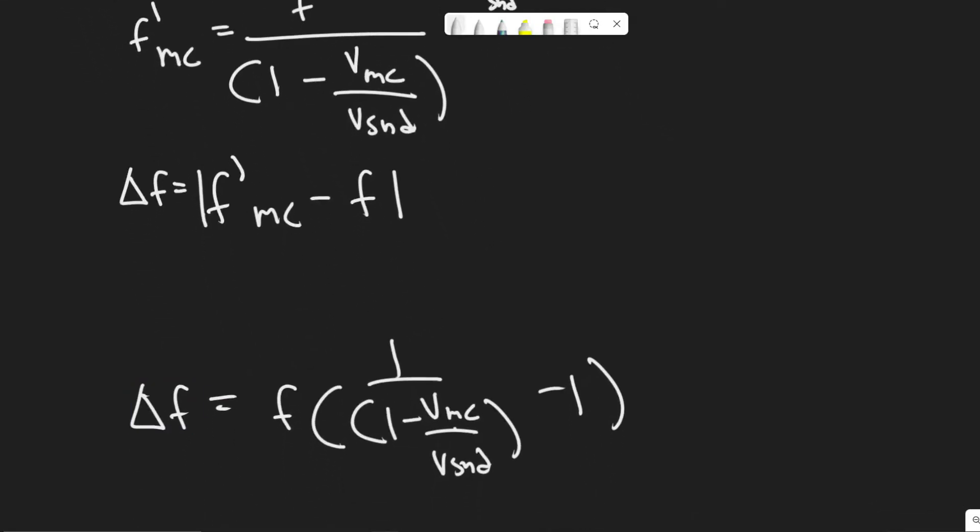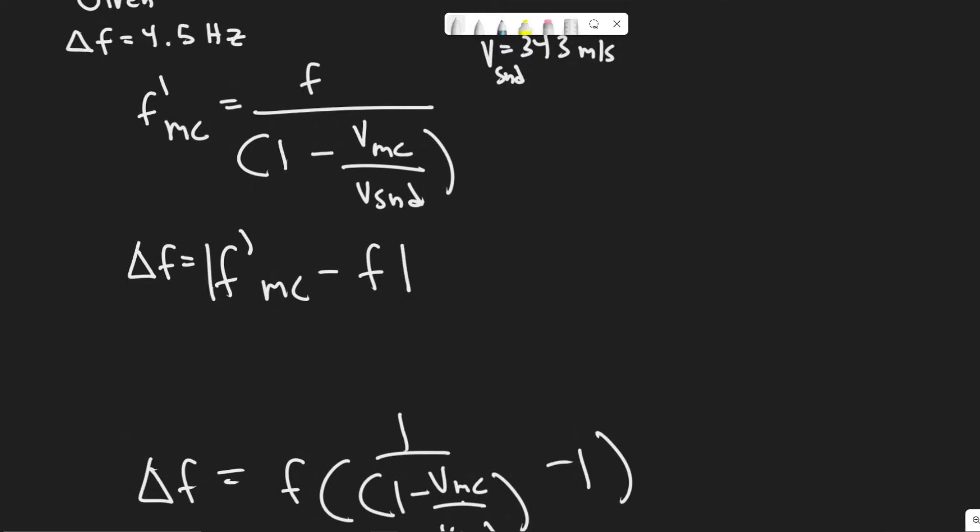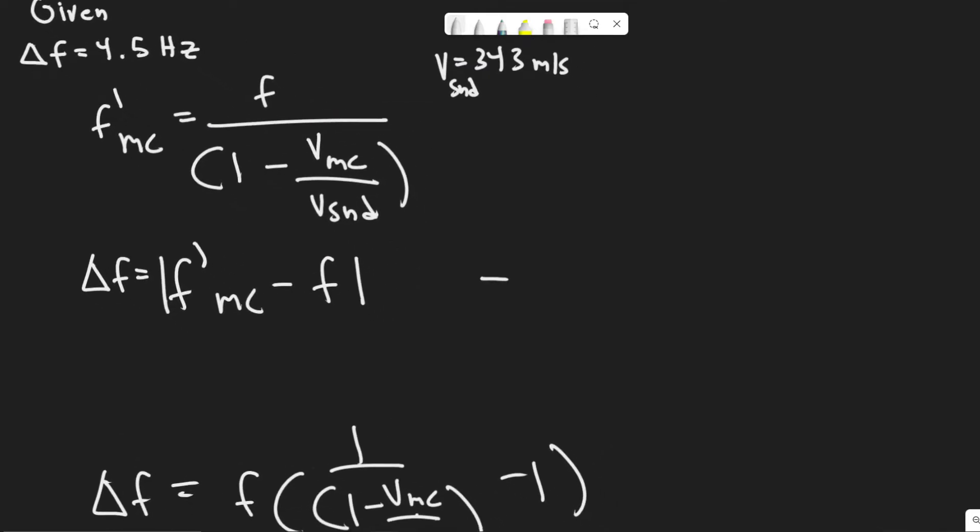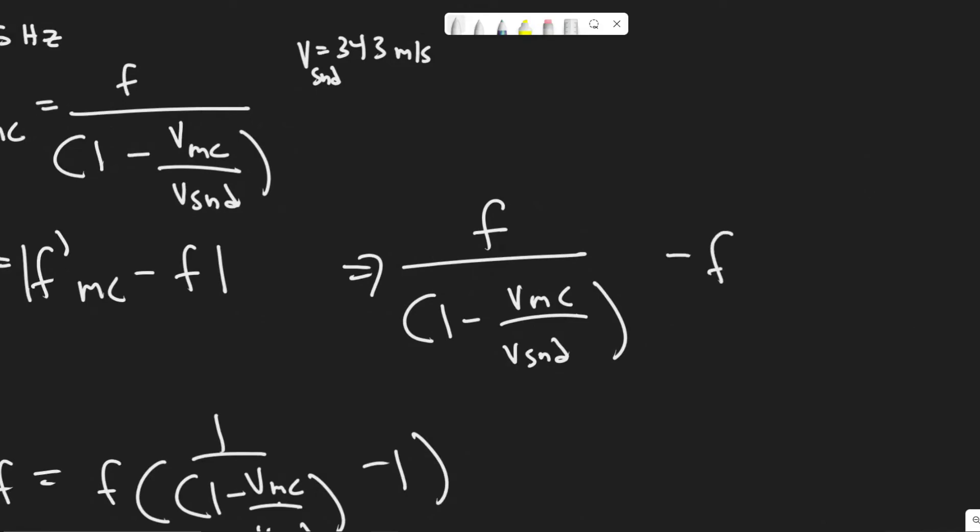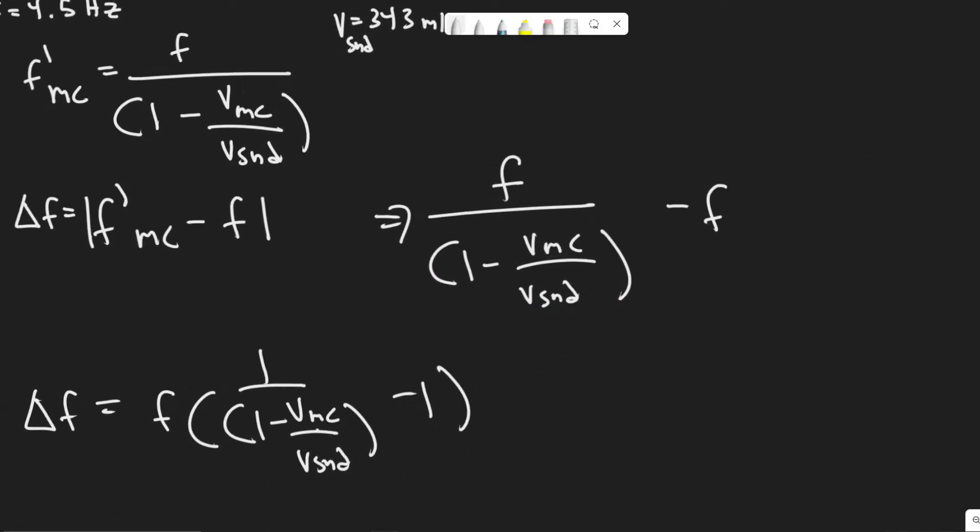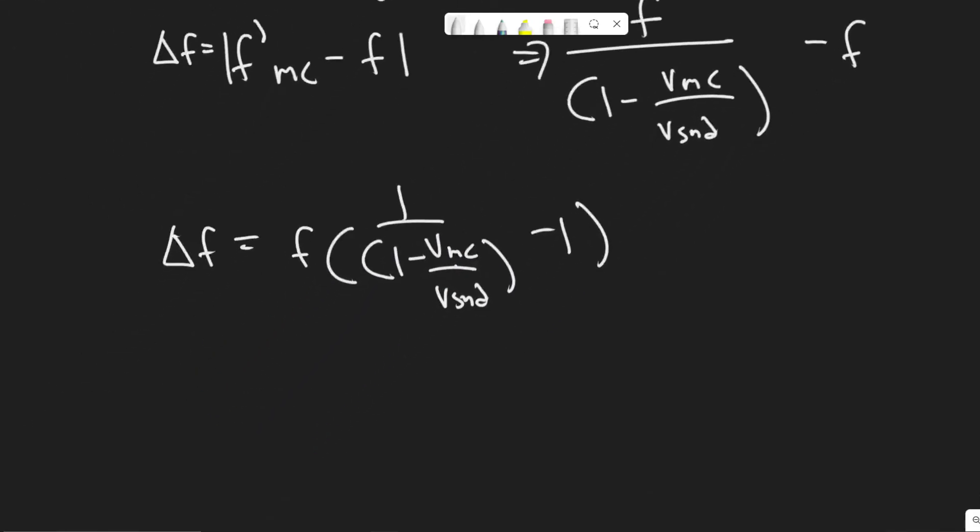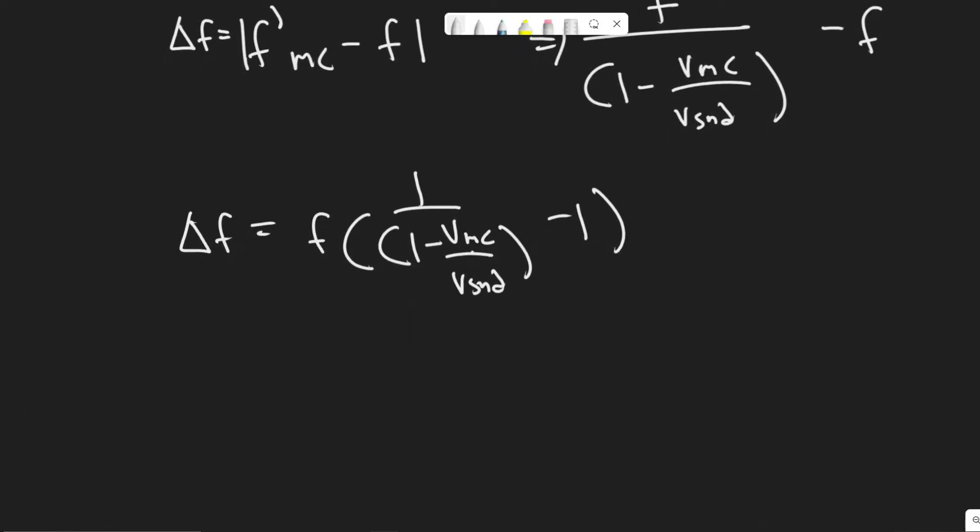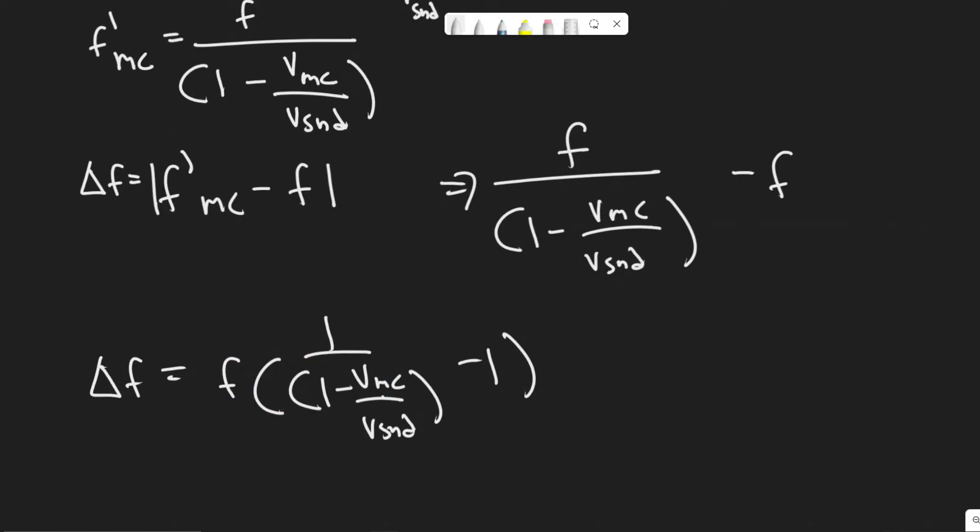So we have delta F equals F prime C. So if I just rewrote this, it would be F over one minus V of the moving car divided by the velocity of the sound minus F. And then what I did here is I factored out the F from both terms. So I just have F multiplied by one over VMC over the velocity of sound minus one. And what we want is this value F, so that's why we got it by itself here, because what they want us to find is the frequency that they're emitting.